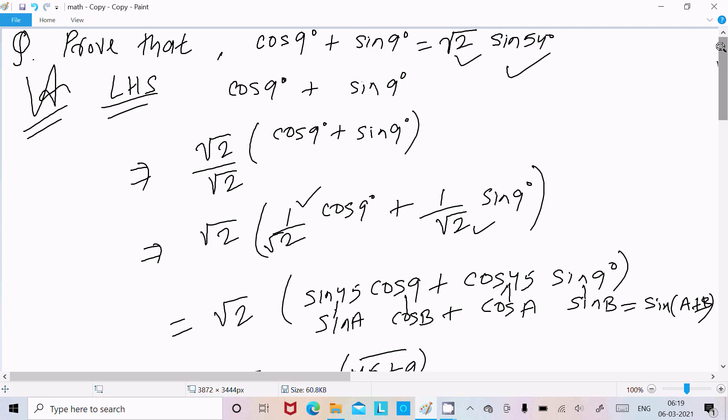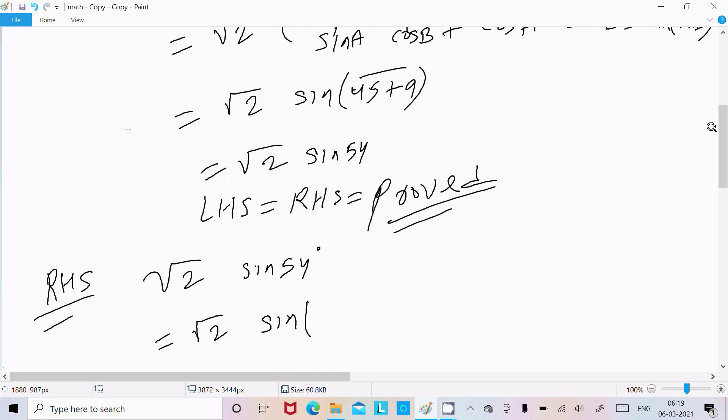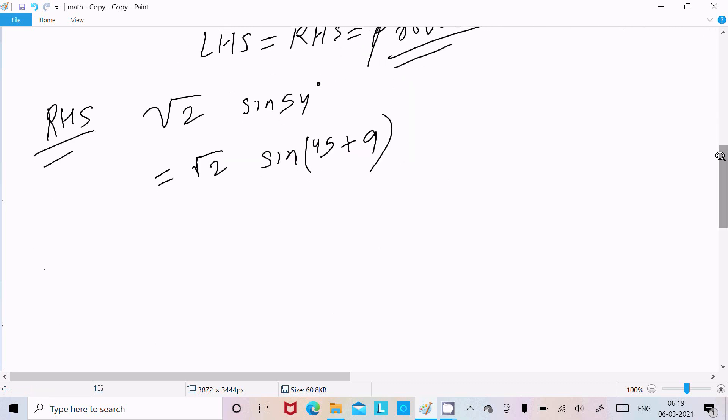45 we can break 46, 8, but here only 9 is there, so that here I'm going to use 45 and 9. 45 value we already know, sin 45. So here √2, so this assume A, here B. Sin(A + B) we can write sin A cos B + cos A...